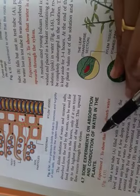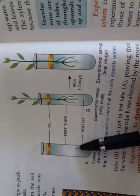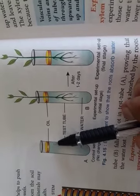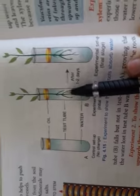Now there are some experiments. The first experiment is to show that the roots are absorbing water. For this, you need to take a control setup — just for comparison. You take one test tube, put water in it, and a little oil on the top. Why oil? So that evaporation of water does not take place. This is test tube A — the control setup with just water and oil.